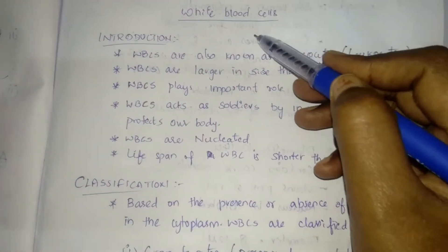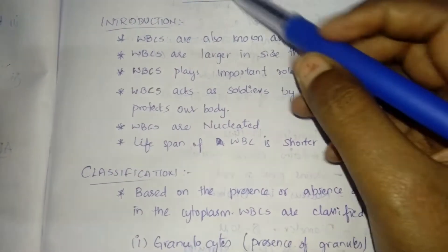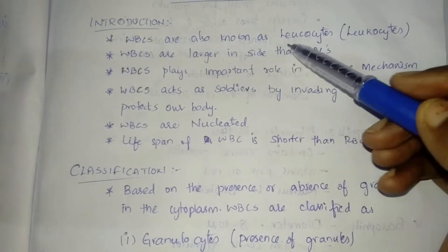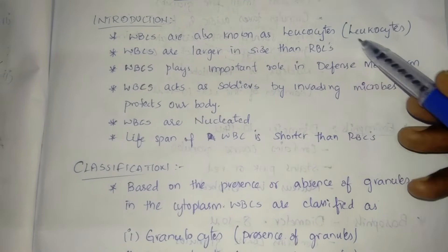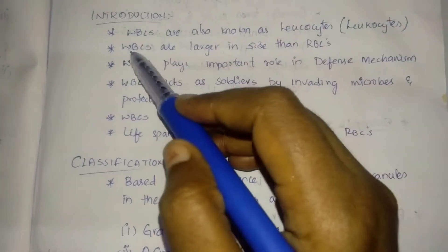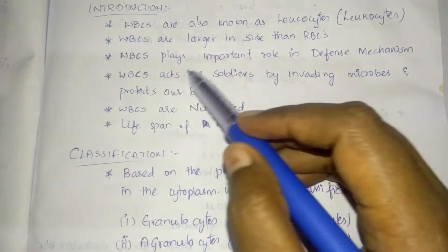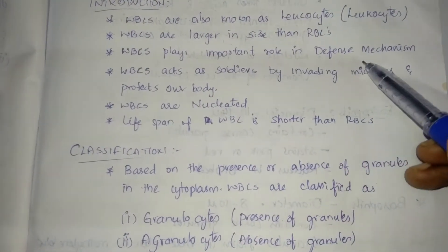White blood cells or WBCs or leukocytes. Introduction: WBCs are also known as leukocytes. WBCs are larger in size than RBCs. WBCs play an important role in defense mechanism.